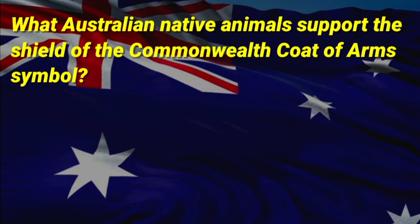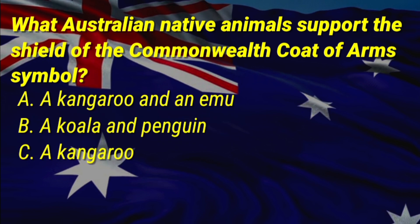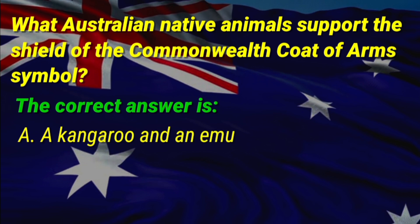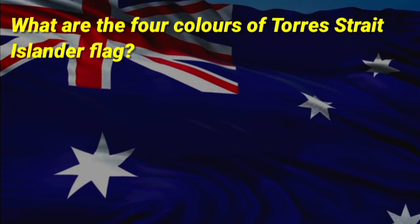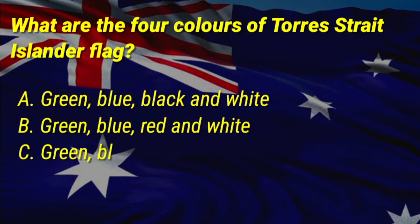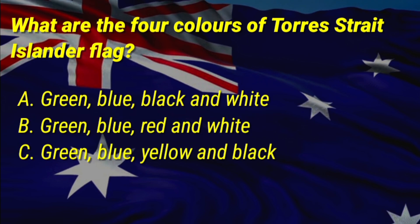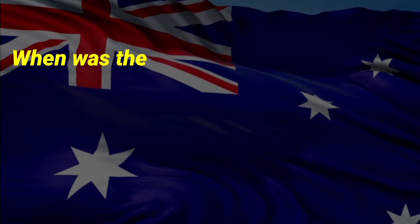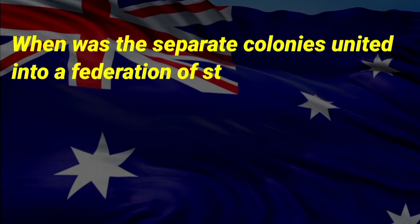What Australian native animals support the shield of the Commonwealth coat of arms symbol? A: a kangaroo and an emu, B: a koala and penguin, C: a kangaroo and snake. The correct answer is A, a kangaroo and an emu. What are the four colors of the Torres Strait Islander flag? A: green, blue, black and white, B: green, blue, red and white, C: green, blue, yellow and black. The correct answer is A, green, blue, black and white.